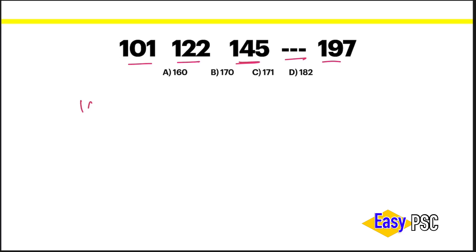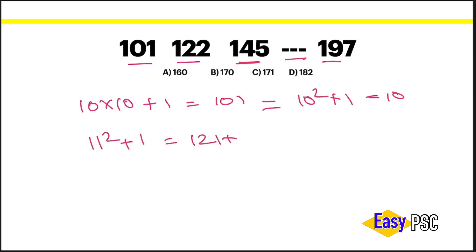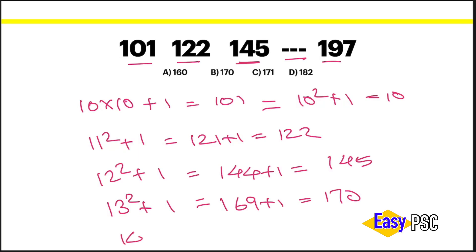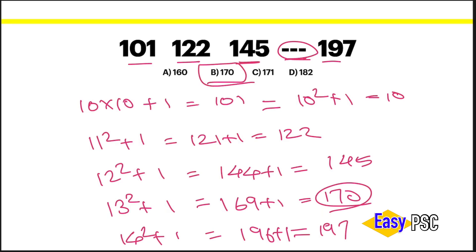This is 10 into 10, my plus 1, that is 3, that is 10 square plus 1. This is 10 square plus 1, 14 square plus 1. 096 plus 1, so here we are 897. Now we are 897. Option B is 87. Then we are 2, square 2 plus 1 plus 1.